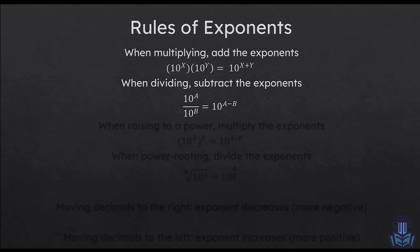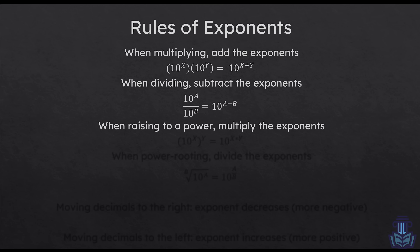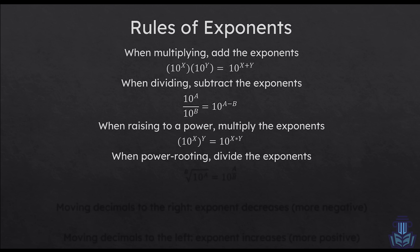The next two rules are not really likely to show up on your MCAT, but I'll cover them here. When you're raising an exponent to a power, like squaring scientific notation, all you have to do is multiply the exponents together. When you're going the opposite direction — doing some sort of root like a square root or cube root — you're just going to divide the exponents. So if you're taking the b-th root of 10 to the power of a, you just do 10 to the power of a divided by b.